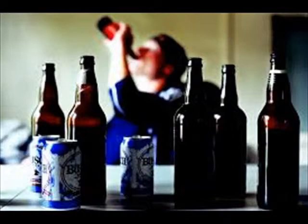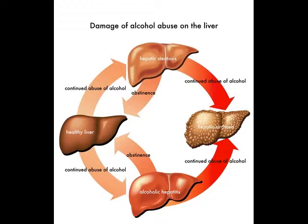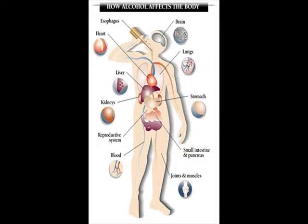Alcoholism, also known as alcohol dependence, is a chronic, progressive, and potentially fatal disease. The symptoms are: drinking excessive amounts frequently, inability to control drinking despite medical, psychological, or social complications, increased tolerance for alcohol, and serious withdrawal symptoms when the person stops drinking.